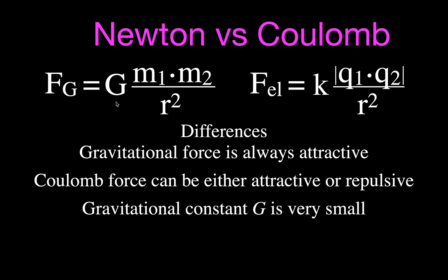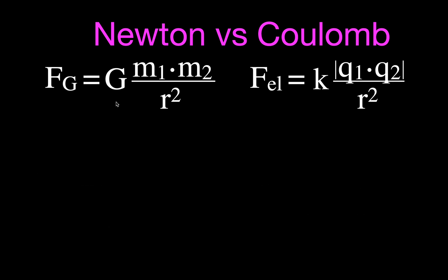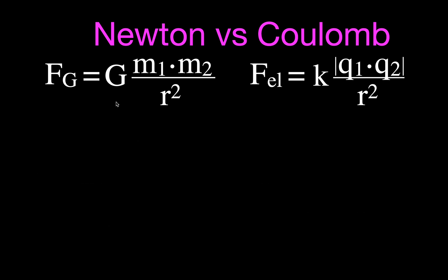Another difference: the gravitational constant G is very small, which we'll show in a moment. The Coulomb's constant K is very large. It's interesting to compare what the force would be for one kilogram at one meter apart versus one Coulomb at one meter apart, so we can see how the constants affect these equations.